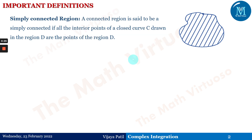Before going ahead, a few definitions. First is simply connected region. A connected region is said to be simply connected if all the interior points of the closed curve C drawn in the region D are points of the region D. This figure shows a simply connected region — the curve has no hole in it and does not intersect itself. It is a simple closed curve where the starting and ending point are the same.